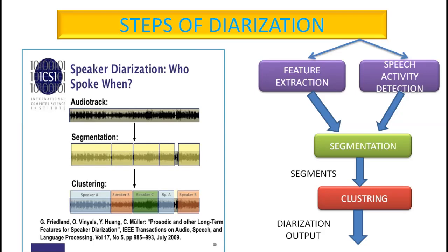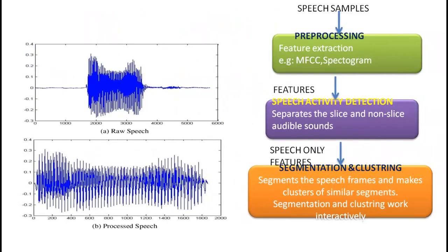We get the diarization output finally. It is about the speech samples, where a raw sample is converted into processed speech. The speech samples are pre-processed, and feature extraction is done. Later, speech activity detection separates the speech and non-speech audible sound. Next, the speech frames are segmented and clusters of similar segments are made; segmentation and clustering occurs iteratively.